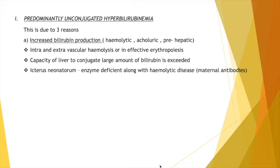The bilirubin produced here is unconjugated bilirubin. When we call it hyperbilirubinemia, it means the liver's capacity to conjugate has been exceeded. Suppose the liver has a capacity to conjugate 5 units of bilirubin, but due to increased red cell destruction there is production of maybe 20 units. The capacity of the liver to conjugate the large amount of bilirubin is exceeded, and hyperbilirubinemia develops.